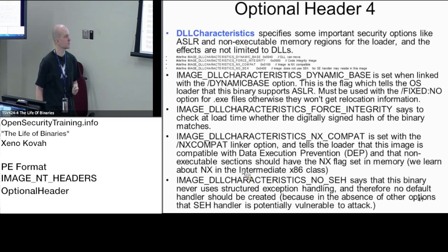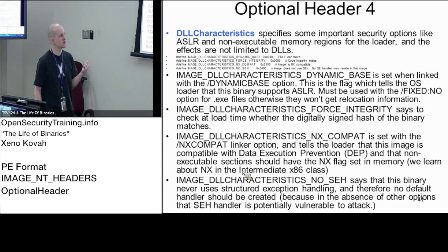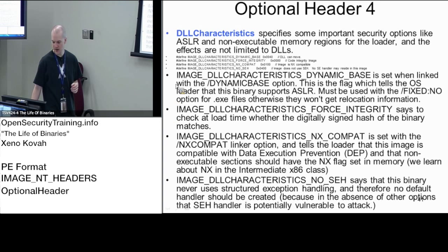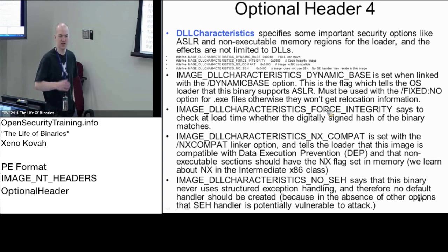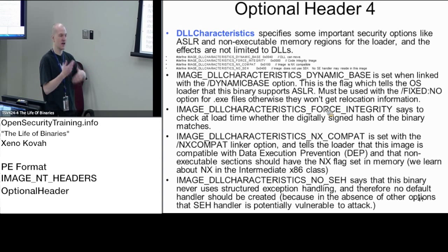The characteristics field in the optional header is more interesting from a security perspective because it contains things like whether the binary supports ASLR. The first one is dynamic base — image characteristic dynamic base. If you set the /DYNAMICBASE linker option at compile time, you're telling the linker your code will support being moved around in memory. This is basically always set by default on DLLs, since DLLs are expected to handle gracefully being moved in memory.